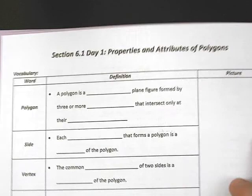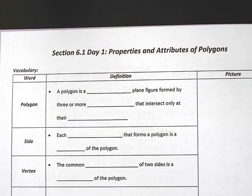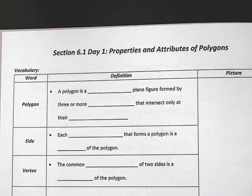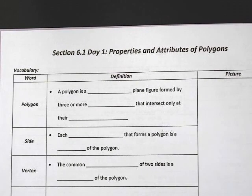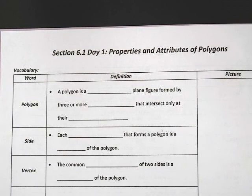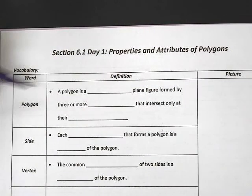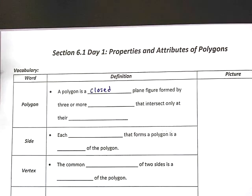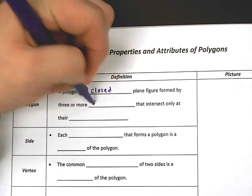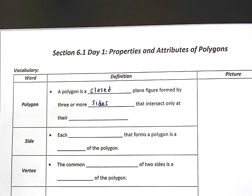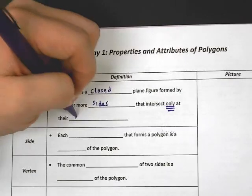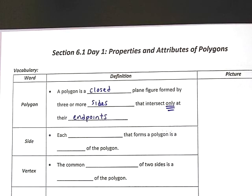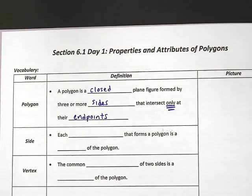This might be like 7th grade geometry, but it's still good to review. It's stuff that we need to talk about, stuff that you're going to be quizzed on and tested on. A polygon is a closed plane figure formed by three or more sides that intersect only at their endpoints. Super important that you understand that they only intersect at their endpoints.